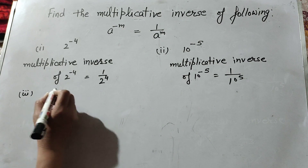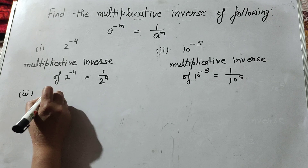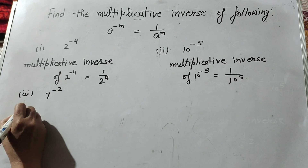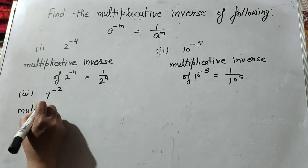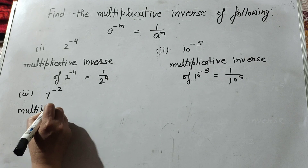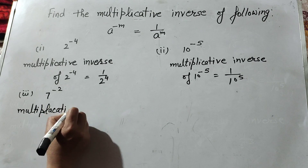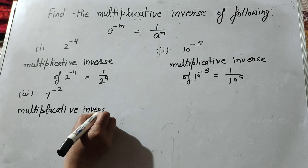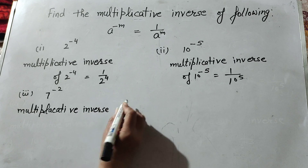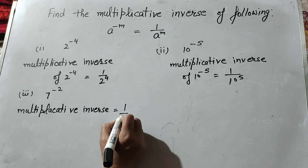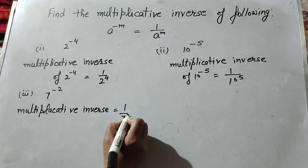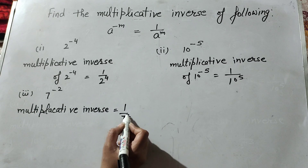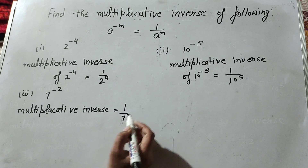Now we move to the third part: 7 raised to power minus 2. The multiplicative inverse of 7 raised to power minus 2 is 1 over 7 raised to power 2.